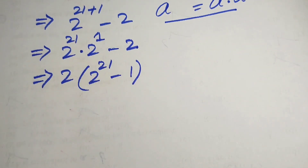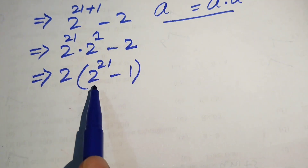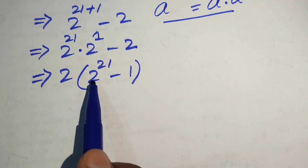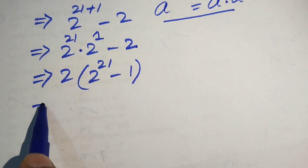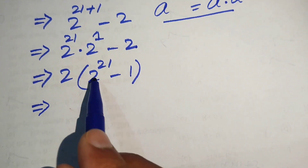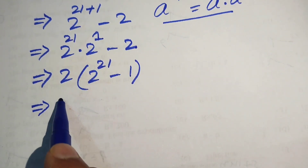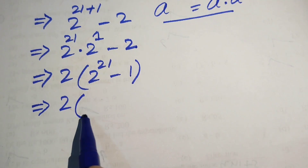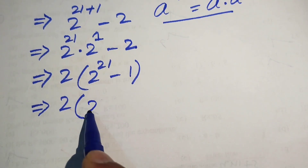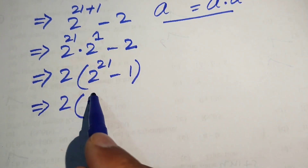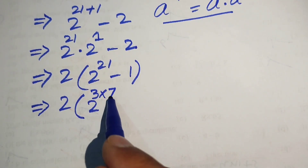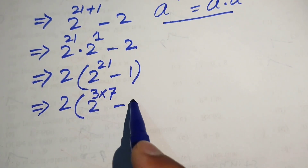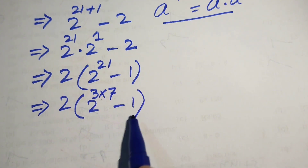In the next step we focus on the term with 2 to the power of 21. We again break this exponent 21, writing it as 3 times 7, minus 1.